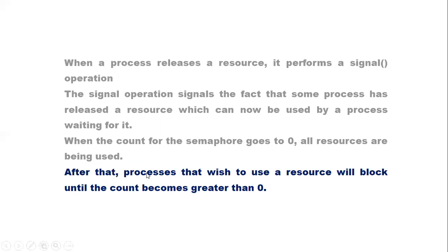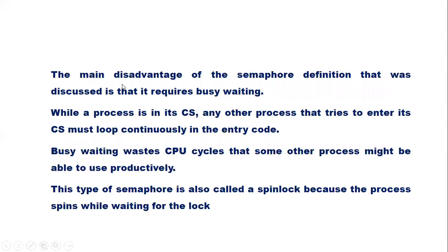This is how the counting semaphore works. The main disadvantage of the semaphore definition discussed is that it requires busy waiting. While a process is in its critical section, any other process that tries to enter the critical section must loop continuously in the entry code — this is known as busy waiting. This wastes CPU cycles that some other process might be able to use productively. This type of semaphore is also called a spin lock because the process spins while waiting for the lock.